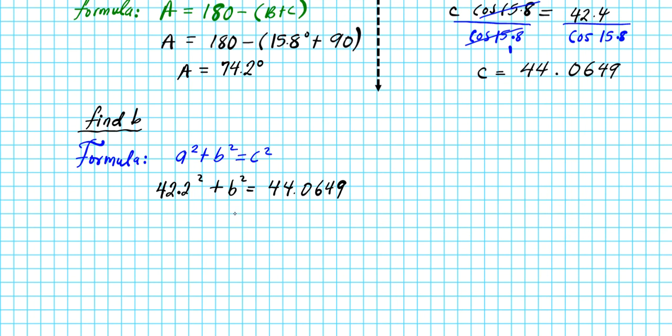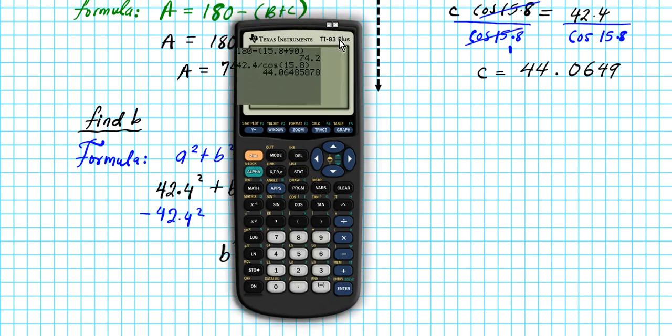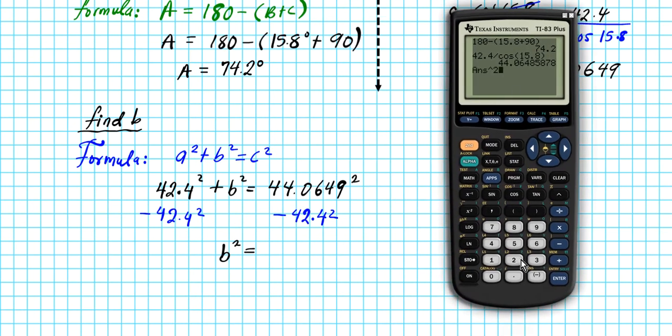To get b squared isolated, we will subtract 42.4 squared from both sides. And we'll have little b squared is equal to, so we have this answer we can raise it to the second power minus 42.4 raised to the second power. See these are the two ways you can enter square: either carrot 2 or just this little x square button right here. They mean exactly the same thing. So we'll have 143.9518 to four decimal places.